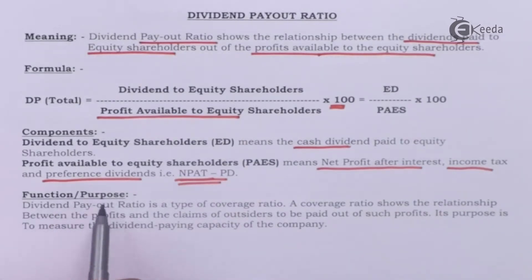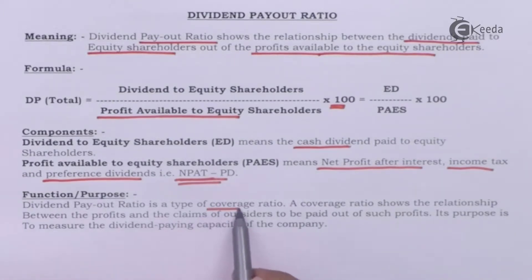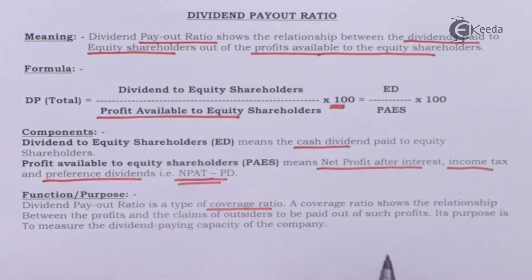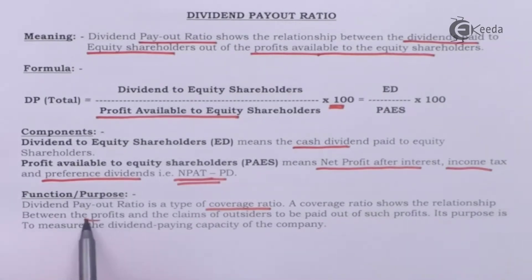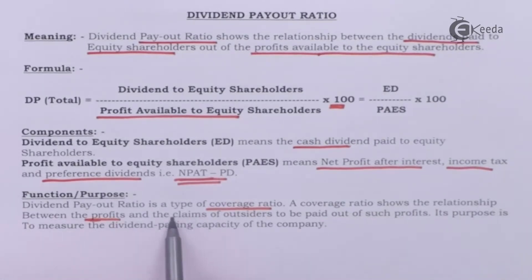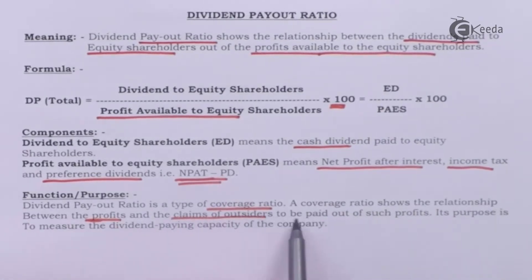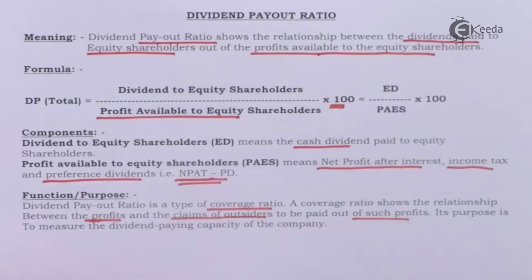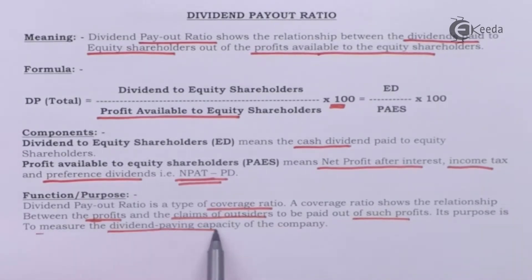Dividend payout ratio is a type of coverage ratio. A coverage ratio shows the relationship between profits and the claims of outsiders to be paid out of such profits. Its purpose is to measure the dividend paying capacity of the company.